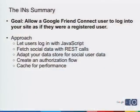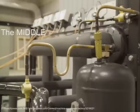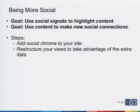To finish up the Ins section — the goal was to allow a Friend Connect user to log into the site as if they were a registered user. We let users log in with a JavaScript button, fetch data via social REST calls to the OpenSocial-compatible endpoint, adapted our data store to store Google Friend Connect user ID information, and created an authorization flow to pick the corresponding row from our database. You can also add caching for performance. Now, the middle: how do we make our site more social? The two goals are to use social signals to highlight important content and to use content to make new social connections.